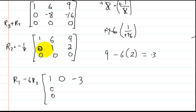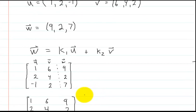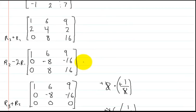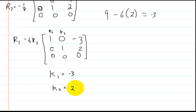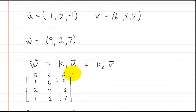Now we copy down row 2 since we didn't touch it, which gives us 0, 1, 2. We were solving for K1 and K2, and it turns out this value is K1 and this one is K2. So K1 equals negative 3 and K2 equals 2.